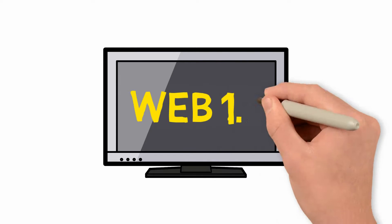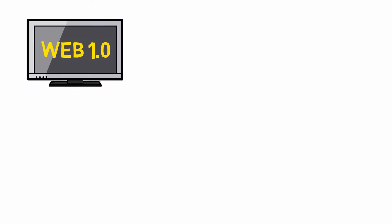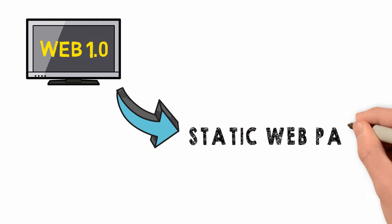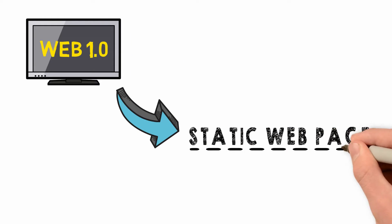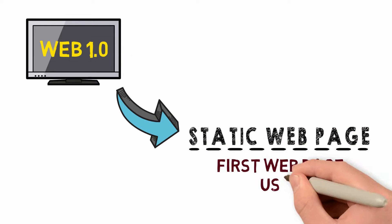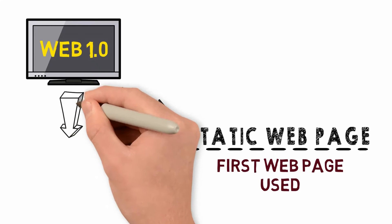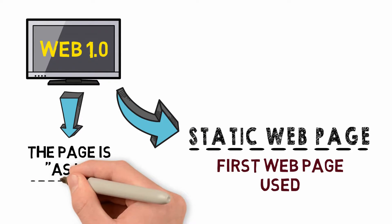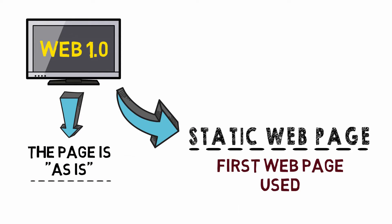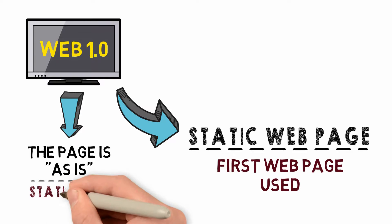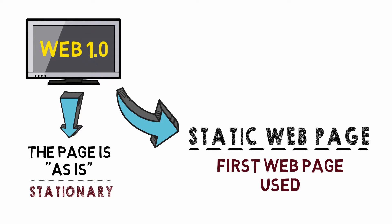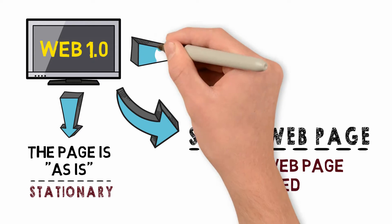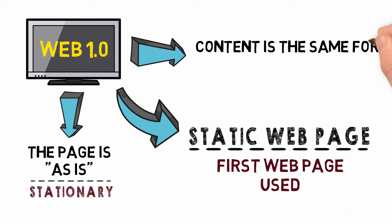Web 1.0, also known as static web page, was the first web page used when the World Wide Web was invented. Its feature is just as stationary — the page is as is and cannot be manipulated by the user. The content is also the same for all users.